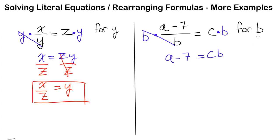To solve for b, I just need to get rid of that c. That c is multiplying b, so to undo multiplication by c, I have to divide by c. This cancels out over here, and I have my solution: b equals a minus seven over c.